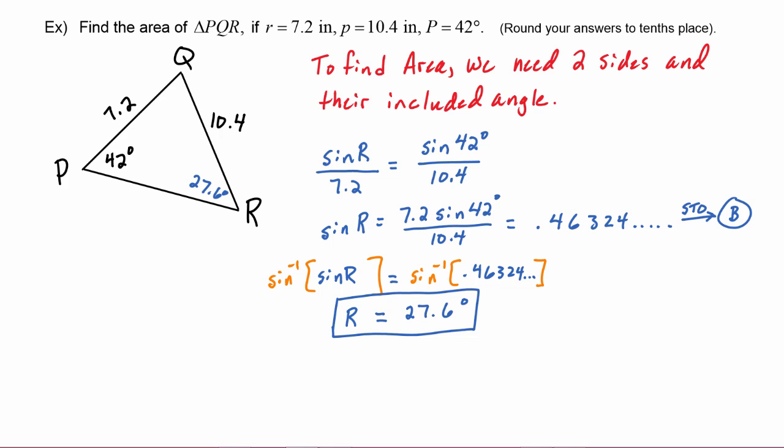Now we can use the triangle sum theorem to find angle Q. So Q is going to equal 180 degrees minus the sum of the other two angles which is 42 degrees plus 27.6 degrees. We enter that on our calculators and we get 110.4 degrees, put that in our picture.